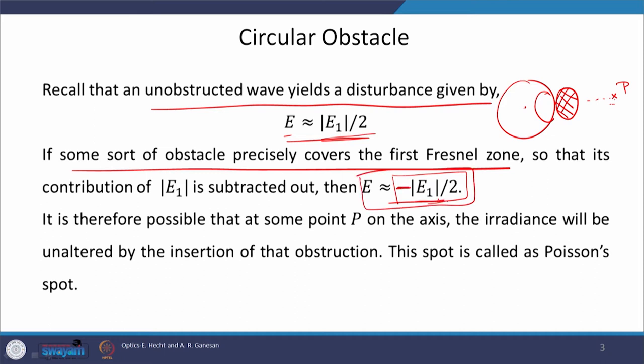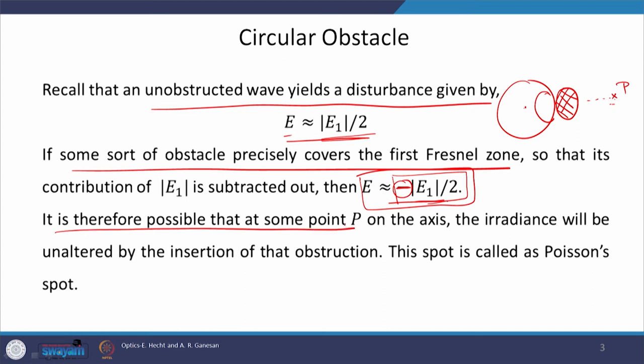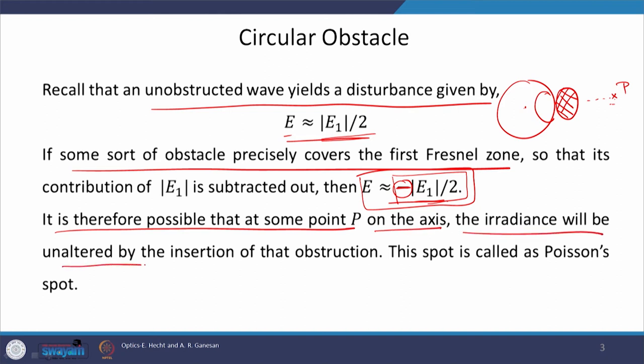Although there is a change in the resultant disturbance in terms of sign, the irradiance at the point of observation P would be unaffected. Effectively, we have a point source and a point of observation P, and we are observing some intensity distribution. Now we put an obstacle in between — still the intensity is the same. This is counterintuitive. It is possible that at some movable point P, chosen such that the obstacle covers exactly the first Fresnel zone, the irradiance will be unaltered by the insertion of that disc.